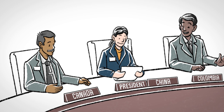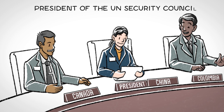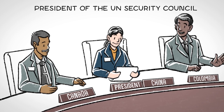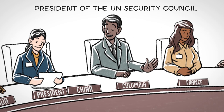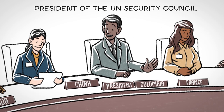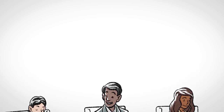At these meetings, one member acts as president of the UN Security Council, where they moderate Council discussions. This role rotates every month, shifting from one member to another in alphabetical order.